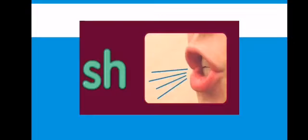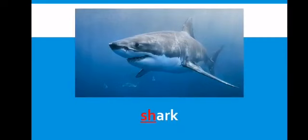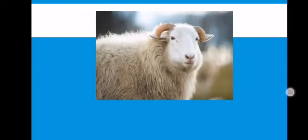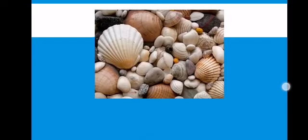The first sound we have is the sound SH. The first word we have for this sound is the word SHARK. The second word is SHEEP. Word number three is the word SHELL.